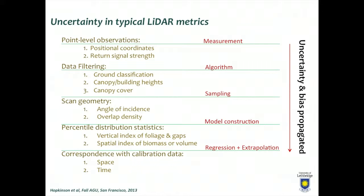If we do a calibration — say a straightforward calibration with field data — there's the bias or uncertainty introduced from our field data into that model. What that means is that every one of these steps, we're propagating a little bit of uncertainty on our way to our final product, whether that's a watershed product or a biomass product. At every one of those steps, some uncertainty is propagated.